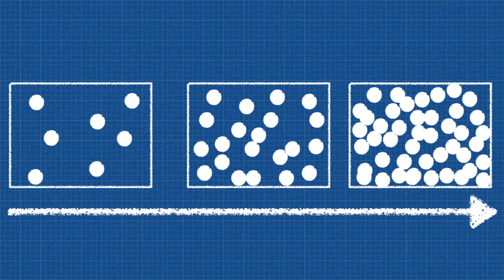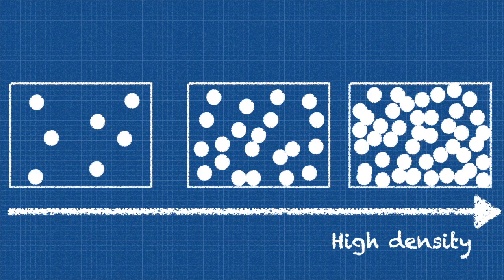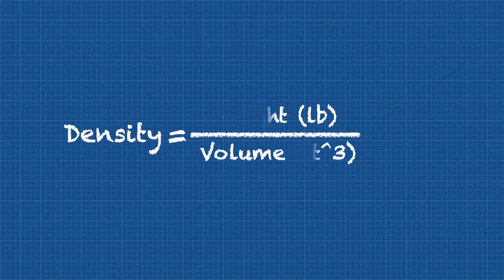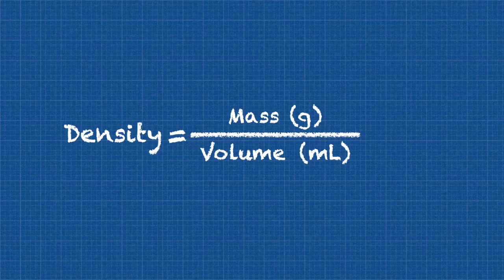So, the more matter something has, the higher the density, and the less matter it has, the less the density. Density is measured in weight per unit volume, pound per cubic foot, or mass per unit volume, grams per milliliter. More than often, it is necessary to compare the density of one substance with that of another. For this reason, a reference standard is needed from which all other substances can be compared. Pure water with a standard temperature of 4 degrees Celsius is typically used as a reference substance when measuring the density of solids and liquids. While air with a standard temperature of 0 degrees Celsius, a pressure of 29.92 inches of mercury is used as the reference substance when measuring the density of gases.